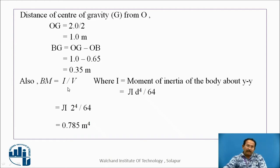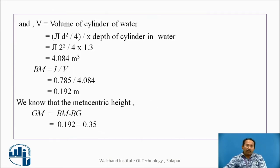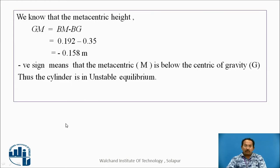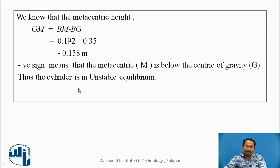BM equals moment of inertia divided by volume. The moment of inertia for a circle is π D⁴ / 64, giving 0.785. The volume is 4.084 cubic meters. So BM equals 0.192 meters. The metacentric height equals BM minus BG, which is 0.192 minus 0.35, giving a negative value. A negative sign means the metacentric height is below, so this is unstable equilibrium.